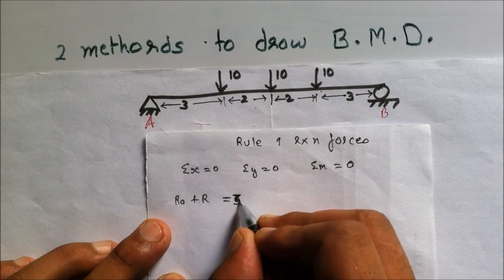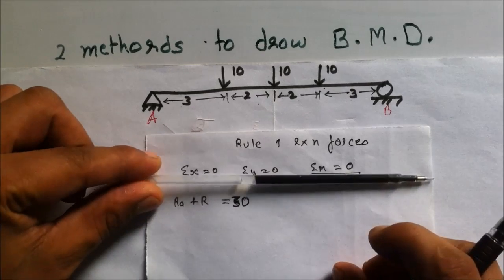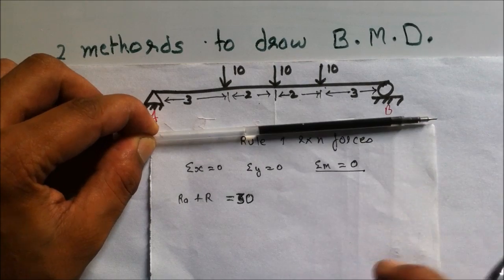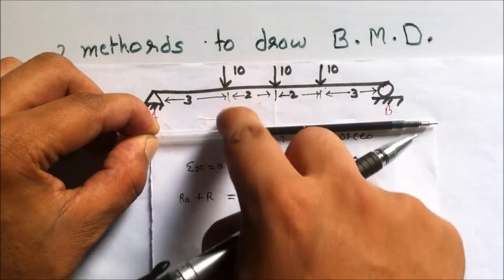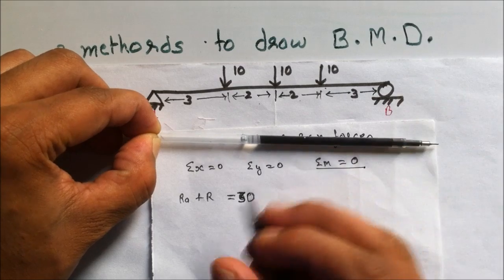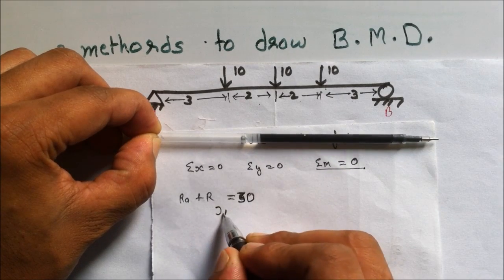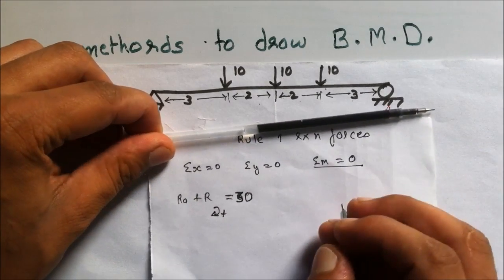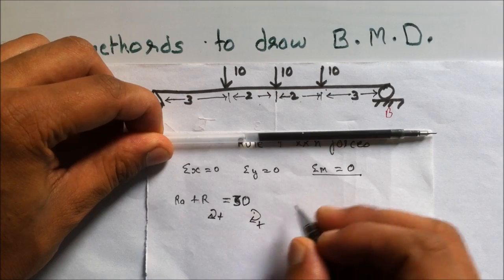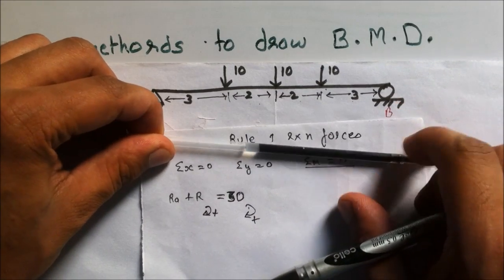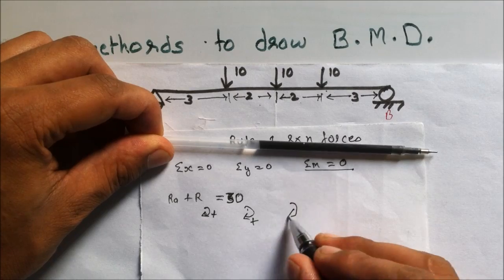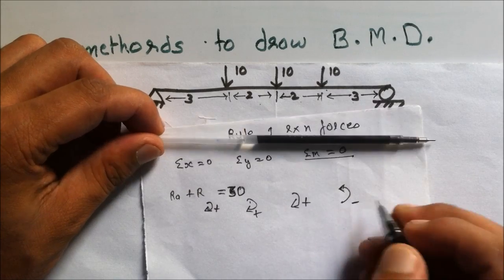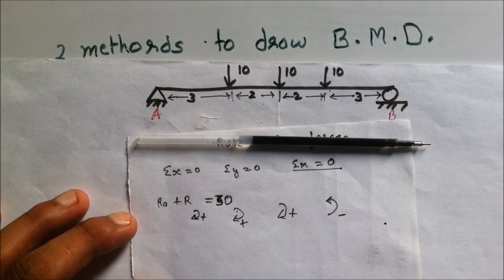RA plus RB equals 10 plus 10 plus 10, that is 30 kilonewton. For the moment equation, I am fixing the beam at A. The first 10 kilonewton load drops down in the clockwise direction — clockwise positive. The second 10 kilonewton is also clockwise positive. The third 10 kilonewton is also clockwise positive, and then RB drops down anti-clockwise — anti-clockwise negative.